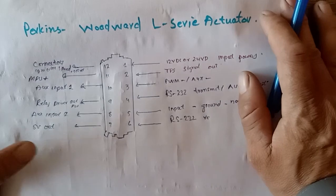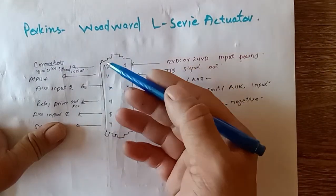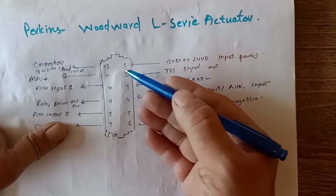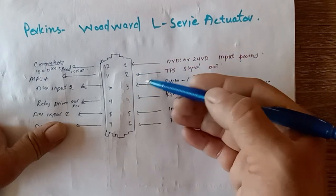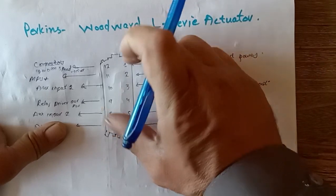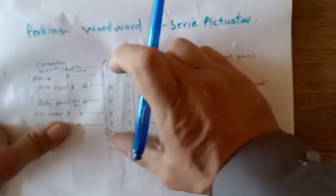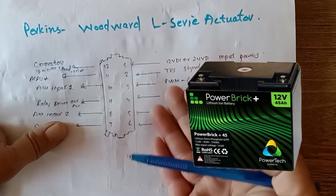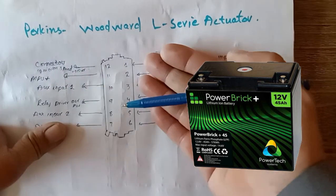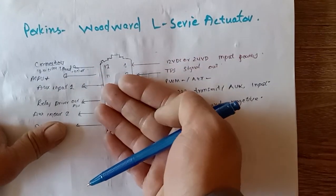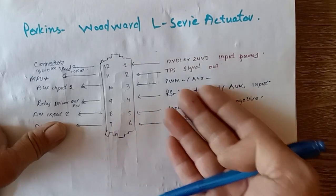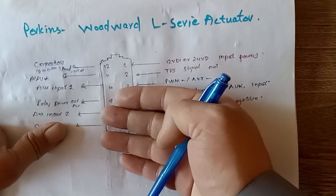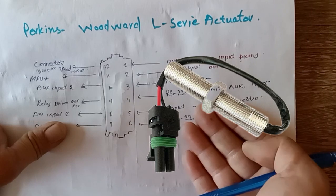Now let me explain the connection. Number one is a power input for turning on this actuator. It needs a supply of power from the battery, negative and positive for turning on first, then controlled by the TPS or MPU sensor.